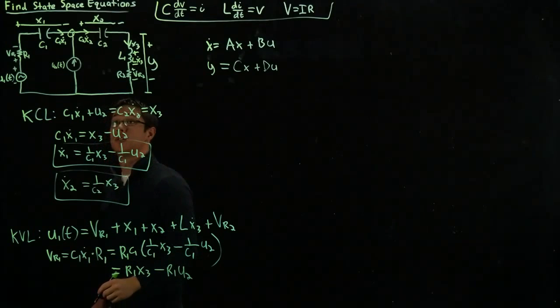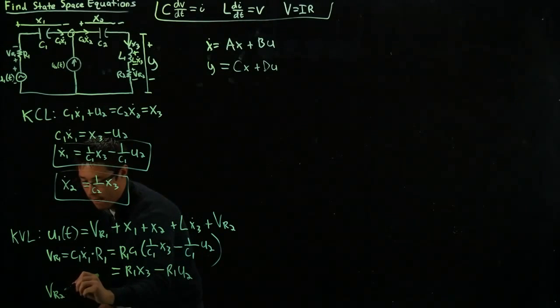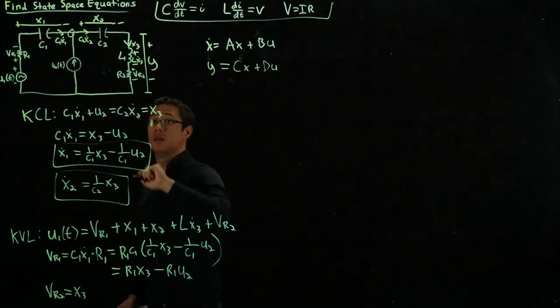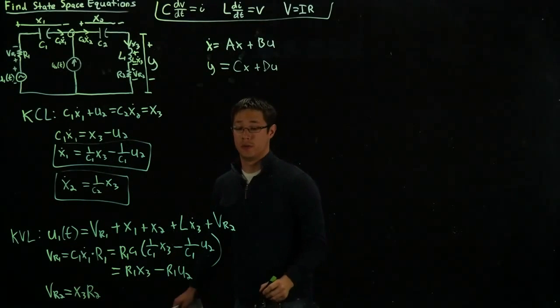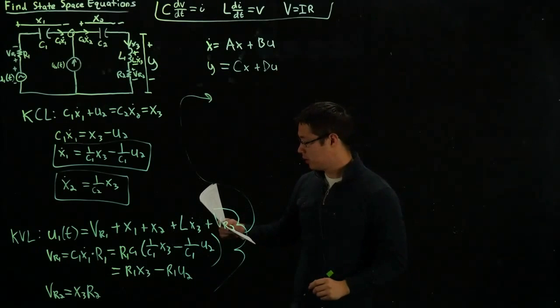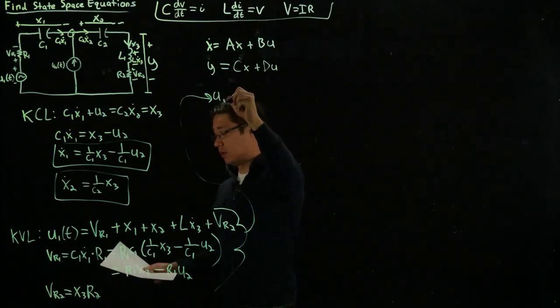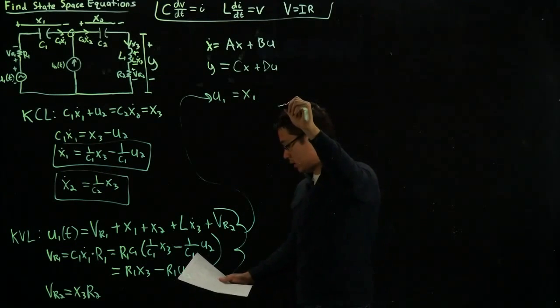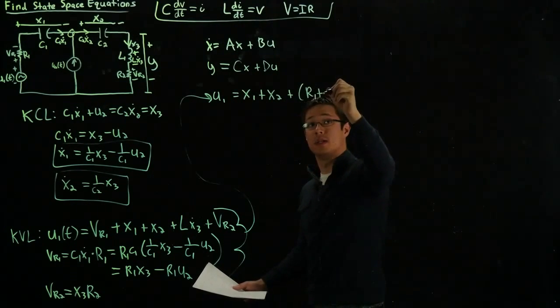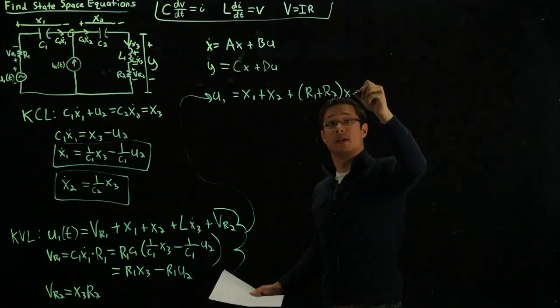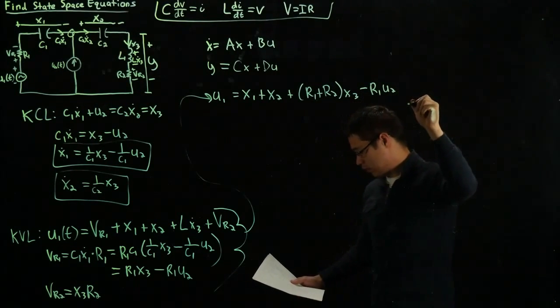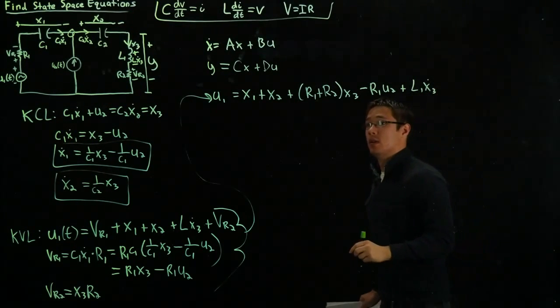Then, if we do a similar thing for VR2, VR2 equals x3 times R2. So if we take this and we do these substitutions, we get U1 equals x1 plus x2 plus (R1 plus R2) x3.